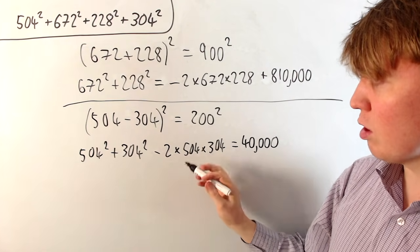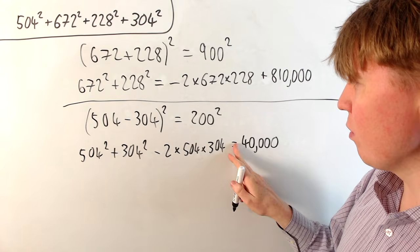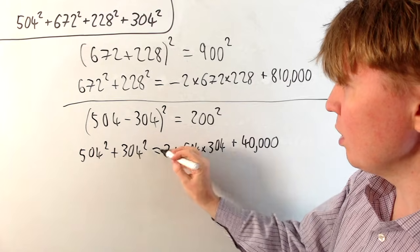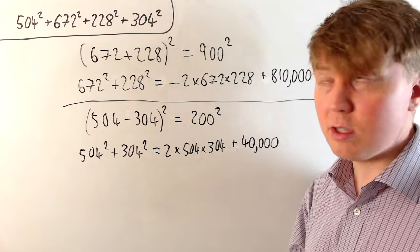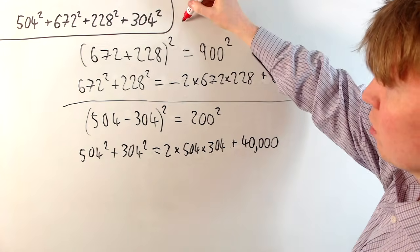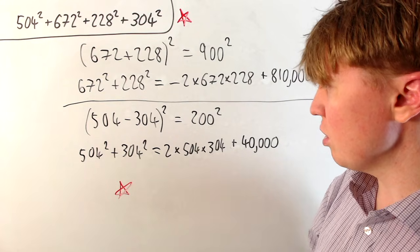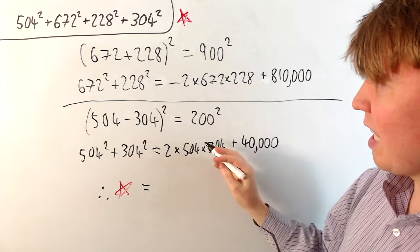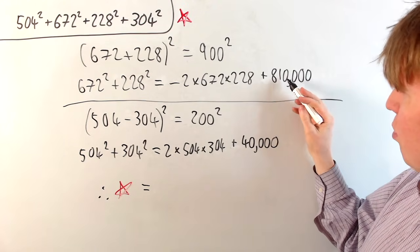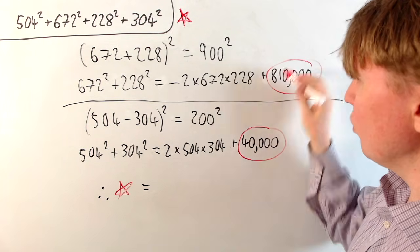So then the sum of these two expressions on its own, we just need to add this 2 times 504 times 304 to the right-hand side. So then this would be equal to this plus 40,000. And then this helps us to get a nice expression for our original sum. So our original sum is going to be equal to, first of all, the sum of these two and then also the sum of these two. So we can do the 810,000 plus 40,000, first of all. It's just going to give us 850,000.